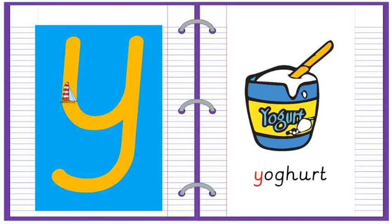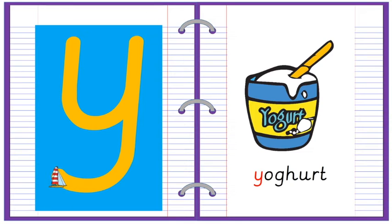Down, around, up. Down, monkey tail. Y for yoghurt.